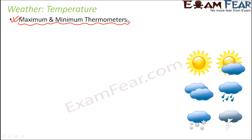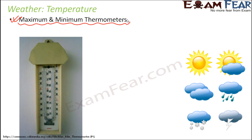The maximum and minimum thermometer also consists of a glass tube with graduations to note temperature, but it is differently designed so that it can measure the temperature of the atmosphere. Let us have a look at this special type of thermometer.